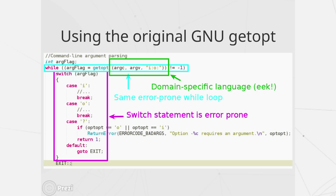With GNU getopt from C, you do a while loop with different cases for different letters for short options. There are several things I don't particularly like about this. I know this is C, but this was the big suggestion I heard online — people said 'just use GNU's getopt, it's great, a lot of legacy applications use it' — but I have several nitpicks.